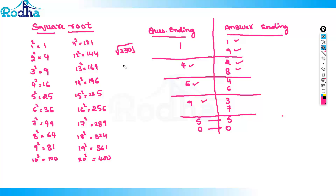We will discuss a small example — how to find the square root of 2301. First step: you have to take the last 2 digits. The last 2 digits are 01. Cut those off. It is ending with 1, so the answer ending will be either 1 or 9. Second step: take the remaining digits, which is 23.